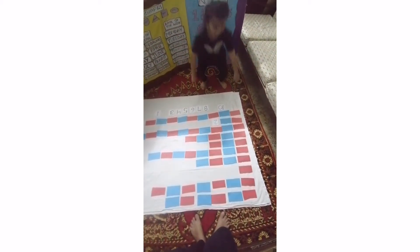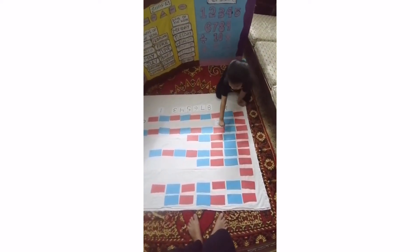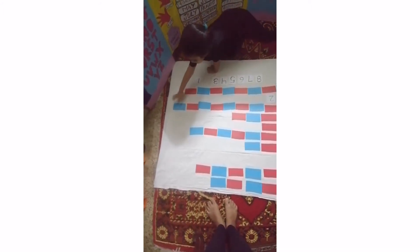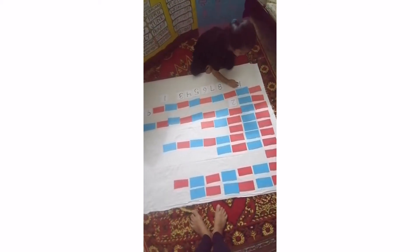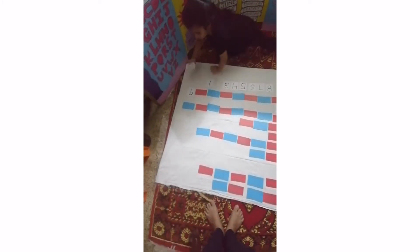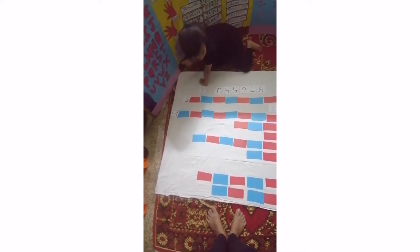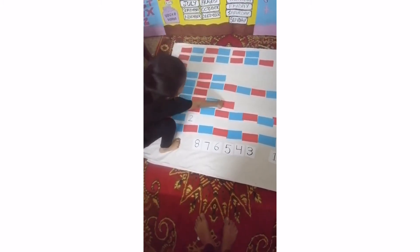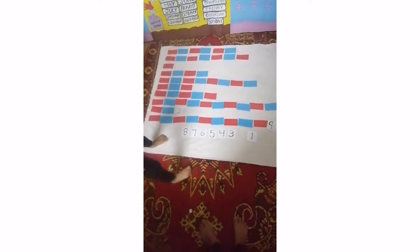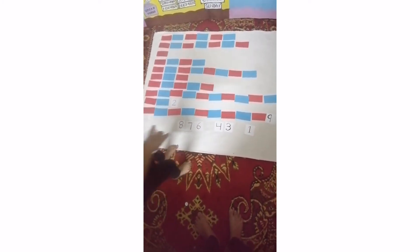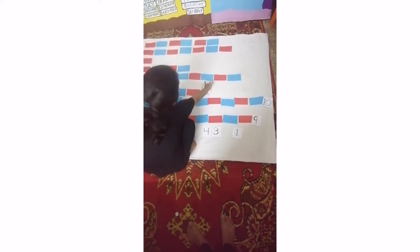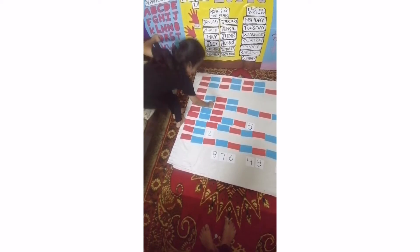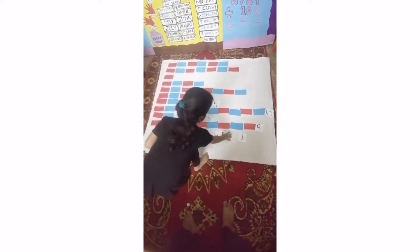Start. 1, 2, 3, 4, 5, 6, 7, 8, 9, 10. There is number 5. Put the number five on blocks. Very good. Next. Where is number three? Put the number three.